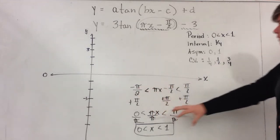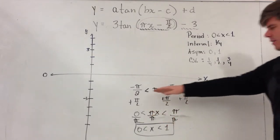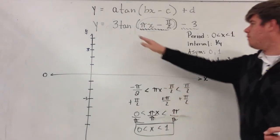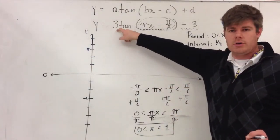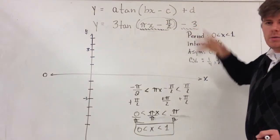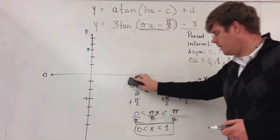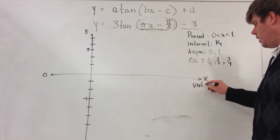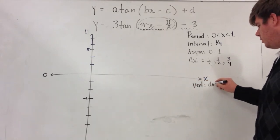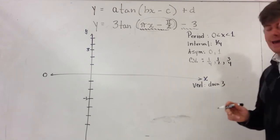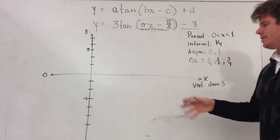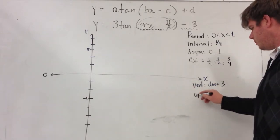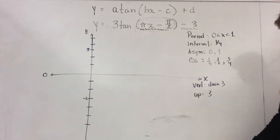Just by doing this compound inequality, I was able to determine the period, interval, asymptotes, and critical values. Now I need to figure out how the remaining values alter my point shift up and down and what they do to my axis. I'm going to have a vertical shift down 3 because it's a negative value. And from my new axis, my critical values are all going to be 3 units up from it.